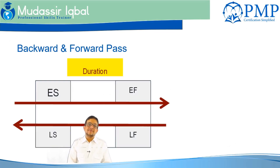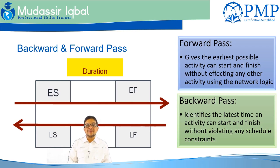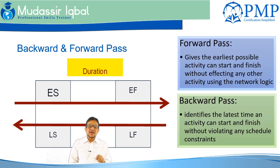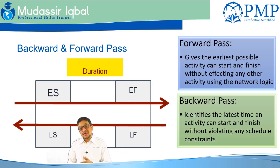Here we will be talking about the forward pass and backward pass on the network diagram. These two passes are very important because they tell you the float available on every activity. The forward pass gives you the earliest possible date when an activity can start and finish without affecting any network logic, moving from left to right.